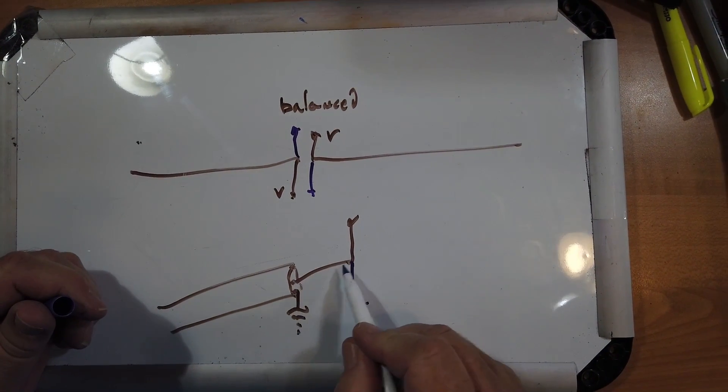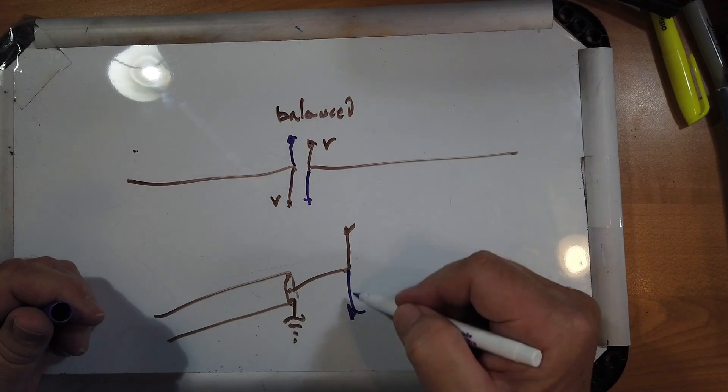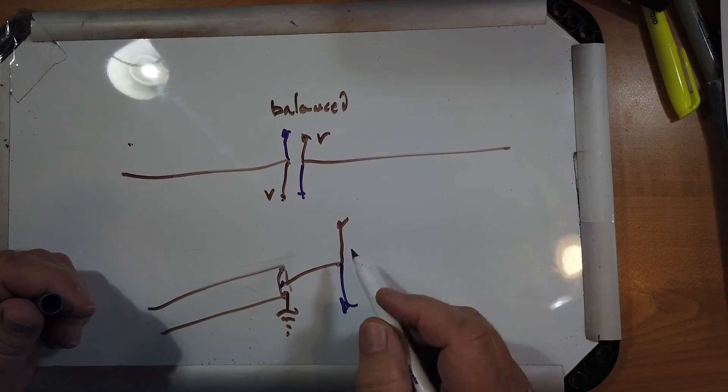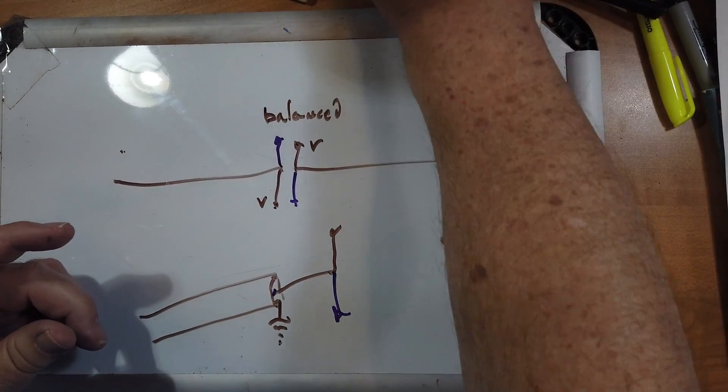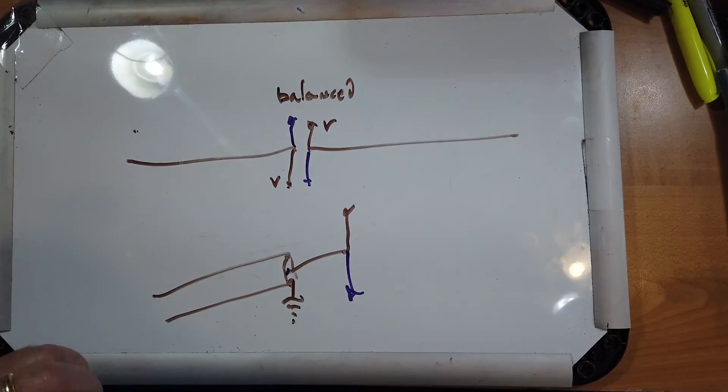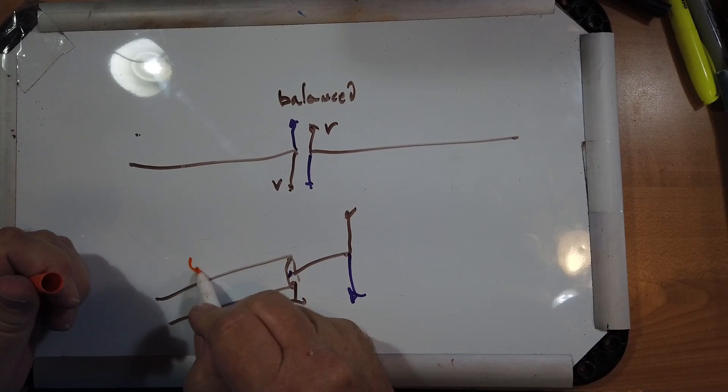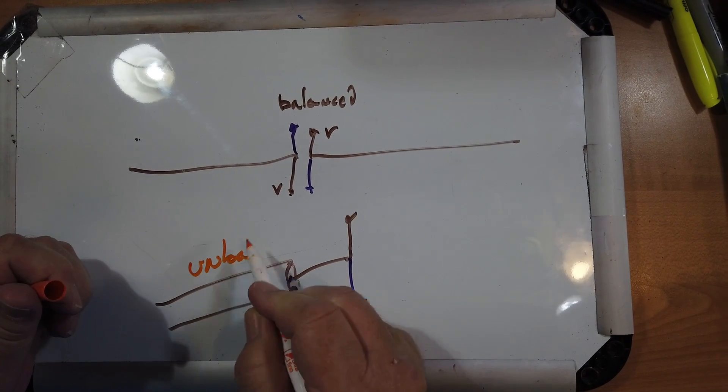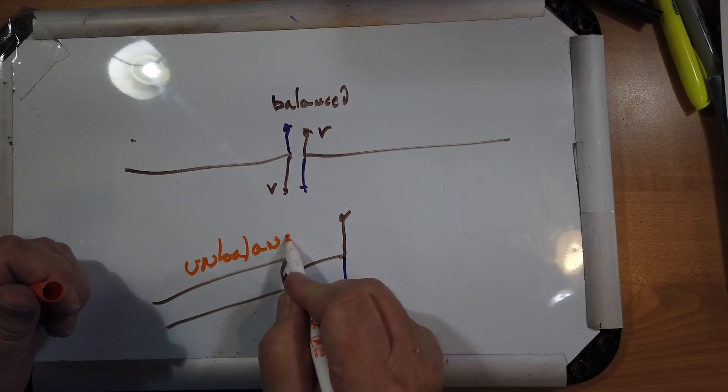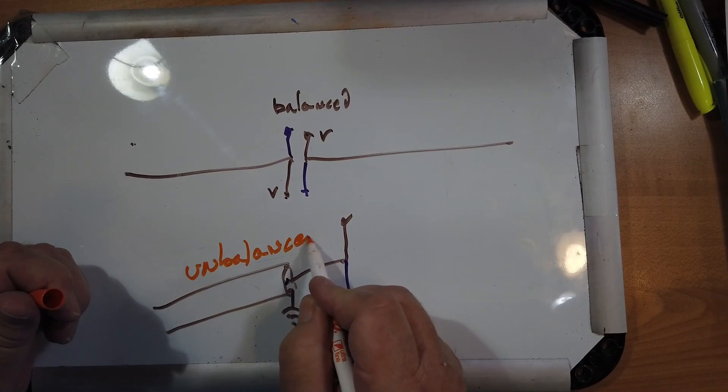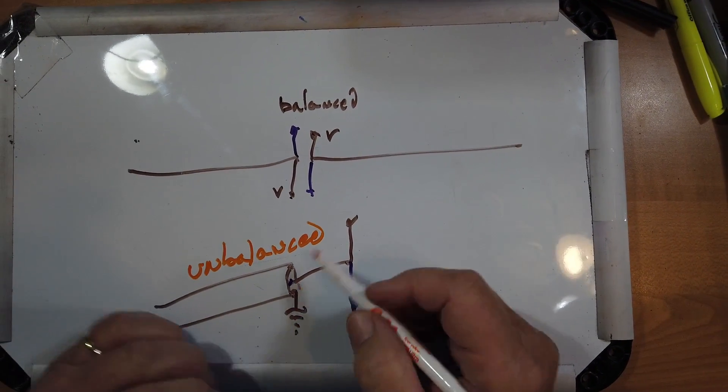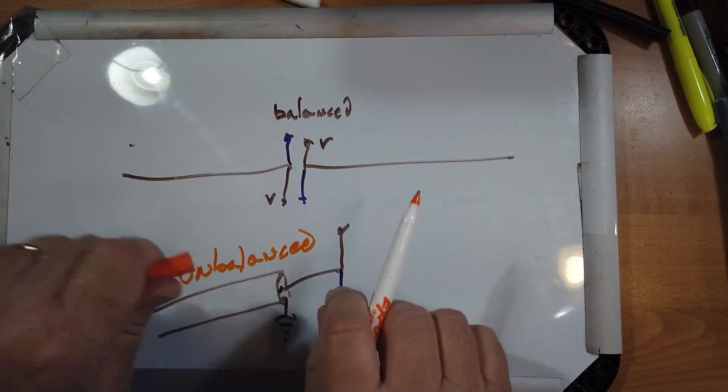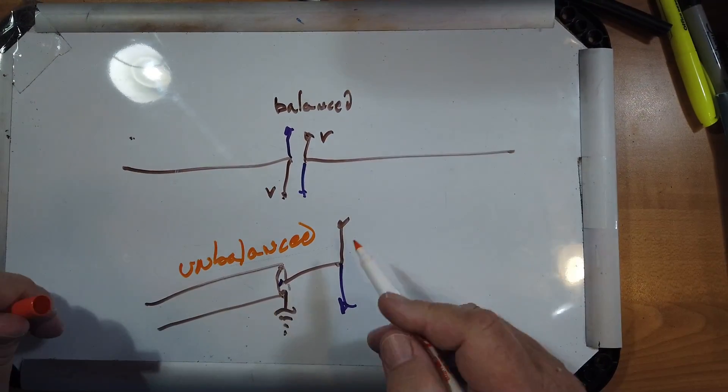Okay, the outer conductor is still connected to ground. So the only part of it that is moving in voltage is the center conductor. Now, we call this unbalanced for the obvious reason that the two conductors are not moving opposite each other, but one's holding still while the other is moving.